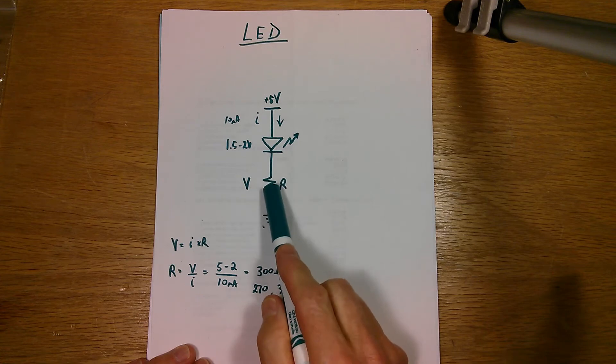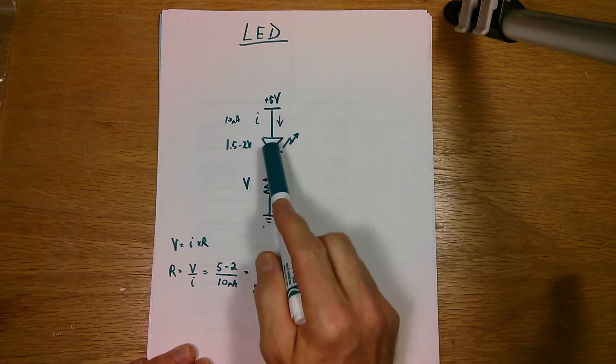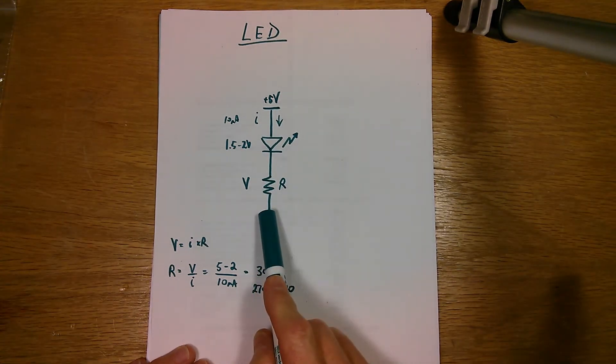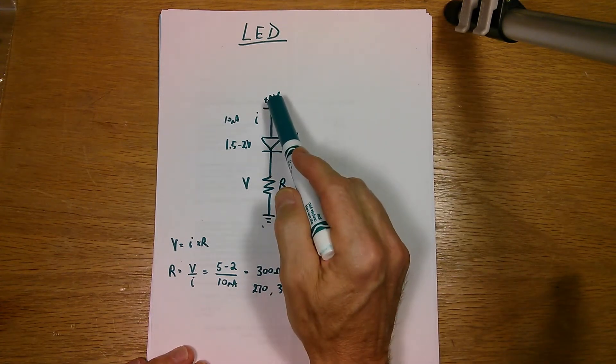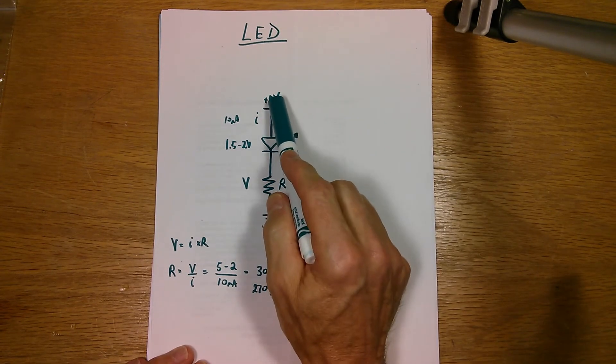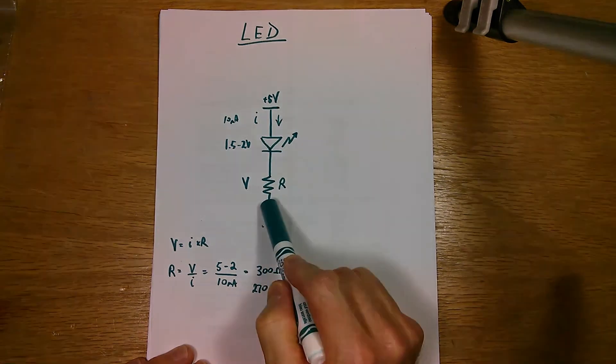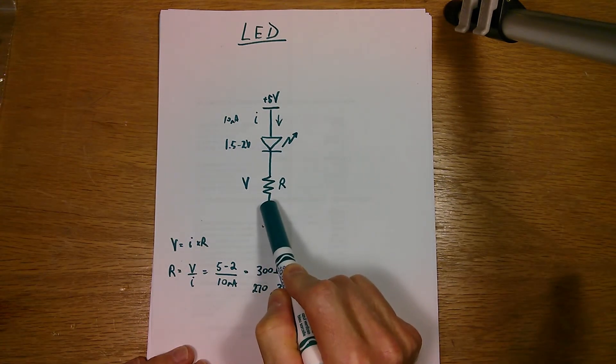And that resistor doesn't have to go here. It can go up in here as well and the diode can be connected directly to ground.